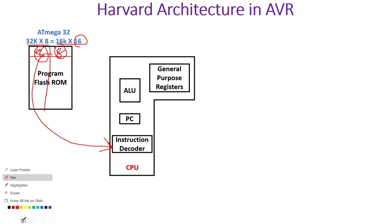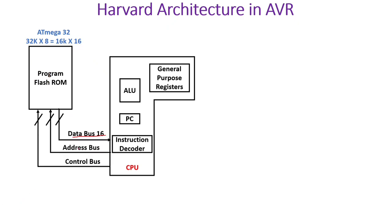The ROM uses a 16-bit data bus along with an address bus and control bus. The address bus size varies depending on which AVR family you are using. The CPU fetches 16 bits of data from ROM, but since AVR is an 8-bit microcontroller, it processes 8 bits at a time — first processing the lower 8 bits, then the upper 8 bits. So it fetches 16 bits per cycle but can only process 8 bits at a time.